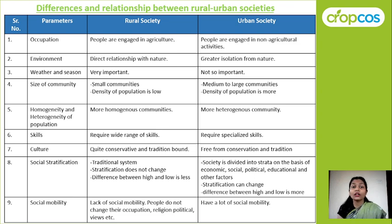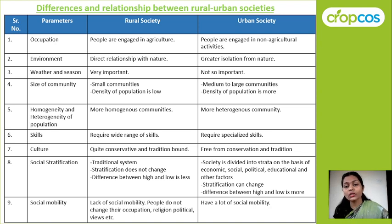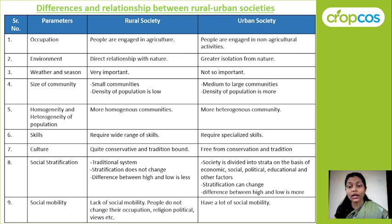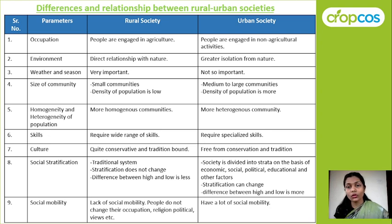Regarding culture, in rural society people are quite conservative and hold on to traditions. But in urban society, they are free from conservatism and tradition. About social stratification: in rural society there is a traditional system and the stratification does not change much — rural people are usually middle class. In urban society, society is divided into various strata on the basis of economic, social, political, and educational factors, and stratification can change — middle class can become high class. The difference between high and low class is more in urban society.